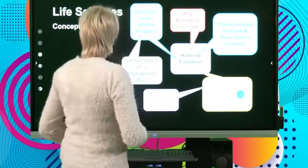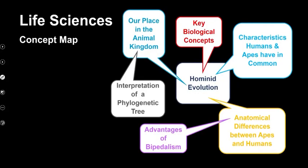Welcome back from the break. I hope you managed to get something to drink and perhaps stretch your legs. So let's have a look at how we interpret a phylogenetic tree. We've looked at our concept map again, the key biological concepts, and what the terms mean, which are very important so that we understand the rest. And now we're going to have a look at how we interpret a phylogenetic tree.